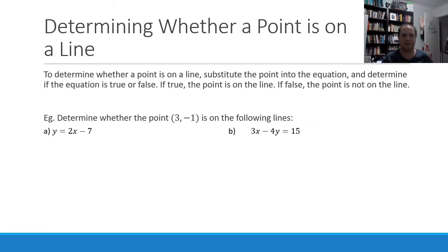All right, so our first task is to determine whether or not there's a point on a straight line. How we do that is we just substitute the point into the equation and see if it's true. If it's true, then the point is on the line. If we substitute the point in and it's not true, then the point is not on the line.